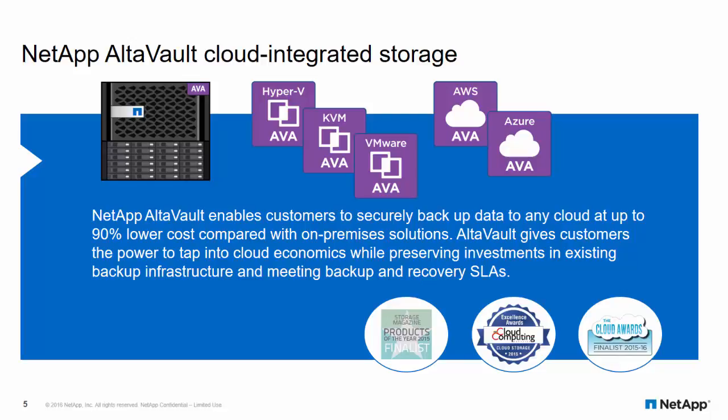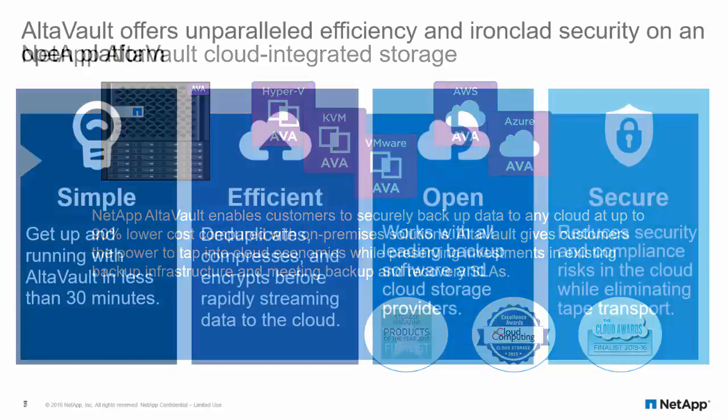AltaFault comes in three models: physical appliances, which range from 32 terabytes all the way up to 384 terabytes of usable local cache; virtual appliance models based on VMware, KVM, and Hyper-V; or cloud-based models that can be deployed from the Amazon or Microsoft marketplaces.